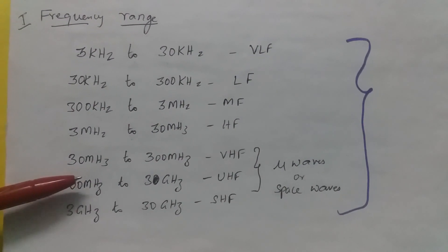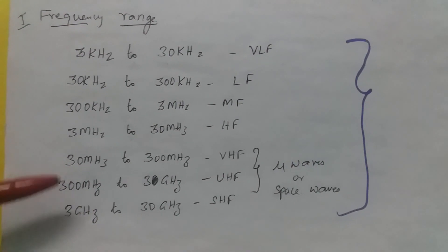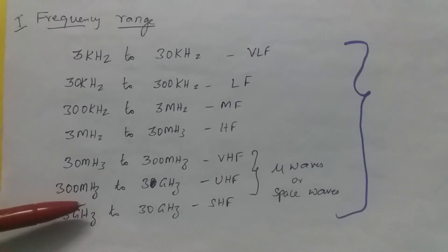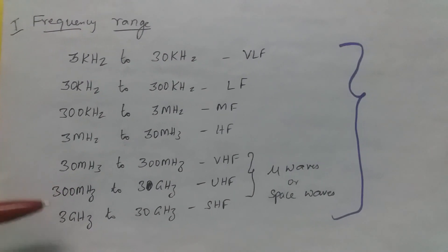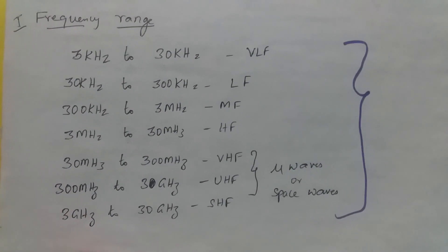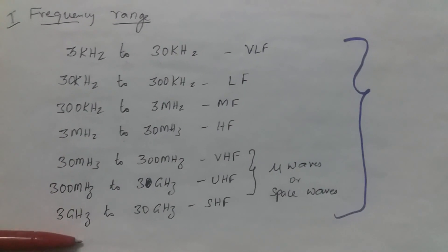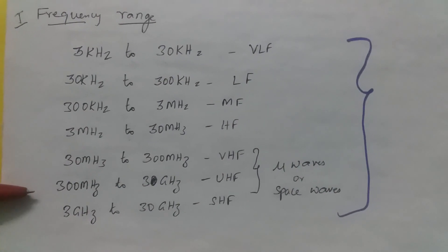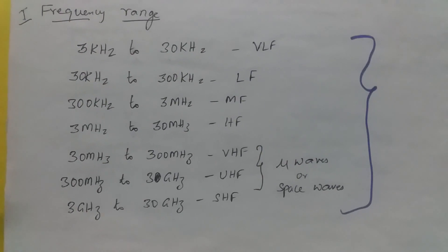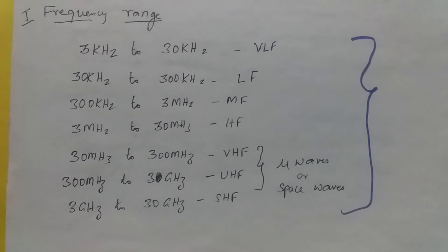From 30 MHz to 300 MHz, we call it VHF range. From 300 MHz to 3 GHz, we call it UHF range. From 3 GHz to 30 GHz, we call it SHF range. VHF, UHF and SHF frequencies are called microwaves or space waves. We use space wave propagation to propagate these frequencies.